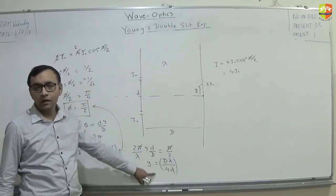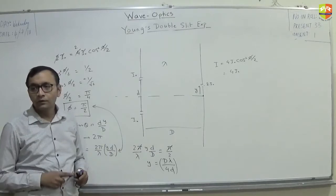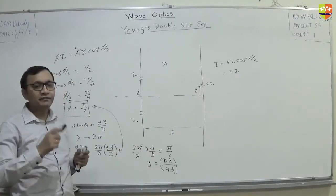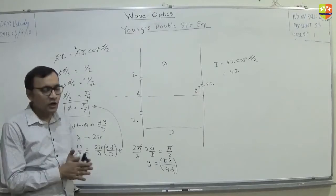Pi cancels. y is equal to d lambda by 4d. So, at this location, above and below, you have intensity which is half of the maximum possible intensity. Ok.